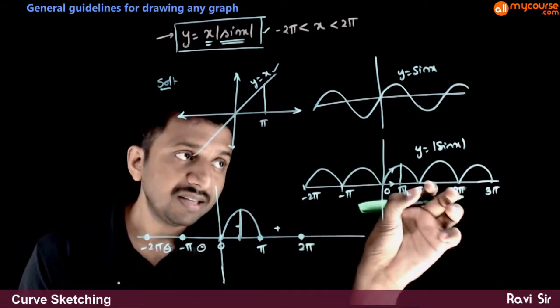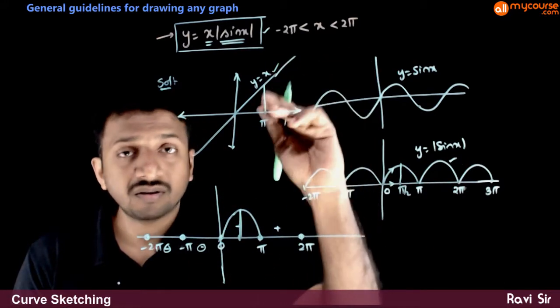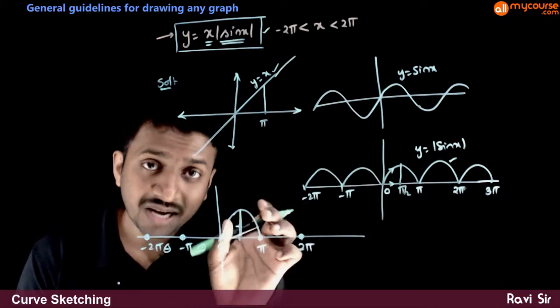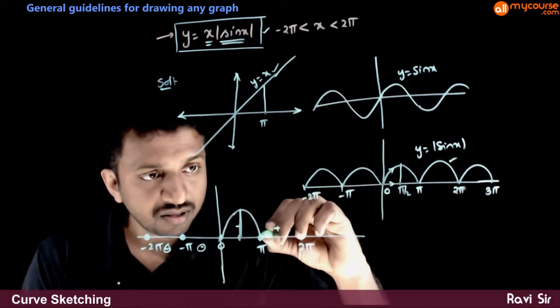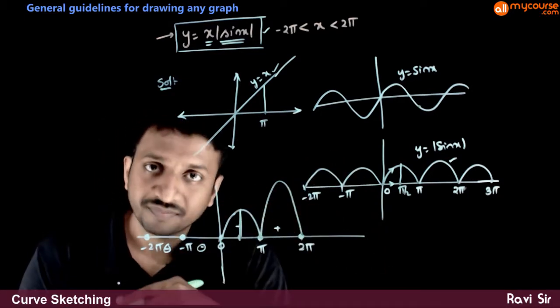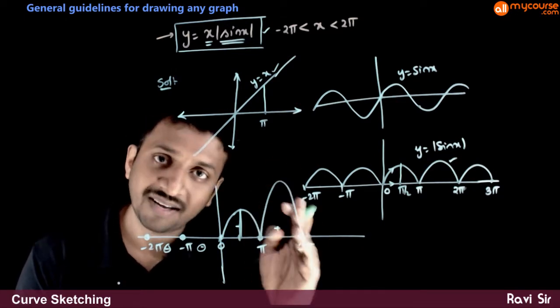And then between pi and 2 pi, the values of sin x are same as the previous values, but the values of x are more. Value of x is more. So this time, in comparison to these values, you have bigger values, but it has to come back to 2 pi. So it increases now and then decreases.